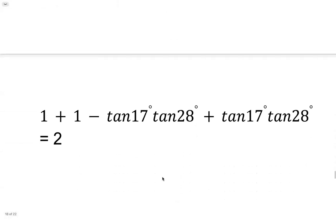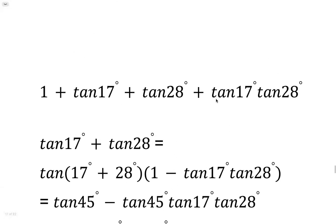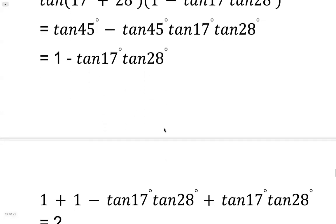So we'll put it back into this formula. So this tangent 17 plus tangent 28 becomes 1 minus tangent 17 tangent 28. So those two terms cancel. We're left with 2.